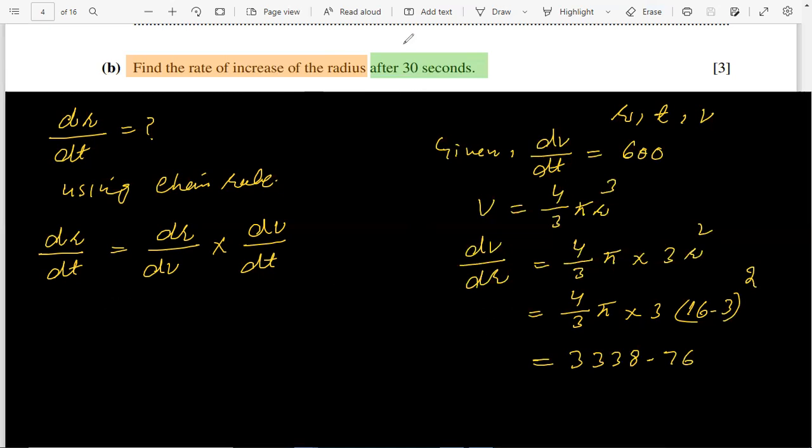It is very important here, guys. dV/dr, but we need dr/dV. So we can flip this equation. Here dr/dV will be 1 over, because the denominator of this value is 1. So dr/dV will be 1 over the calculated value.